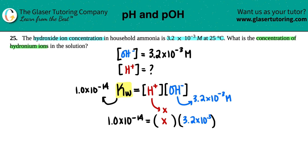So pretty simple. We're just going to divide on both sides by the hydroxide. I'm going to divide by 3.2 times 10 to the negative 3rd on both sides. These cancel out. And we're left with X, which is the concentration of the H+. So I'll just put that right here.